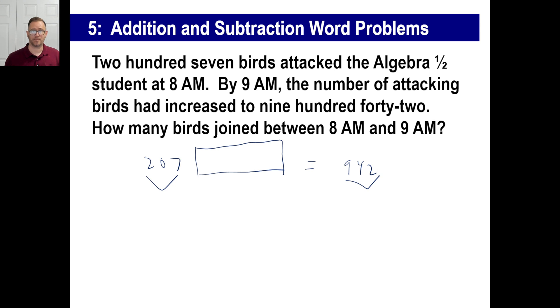We're going to add them? No. I'm not going to add them because then you would have more birds than 1,100. So we're going to have to subtract. So 942 minus 207. In other words, it's 207 plus 735. There we go. That's our problem.